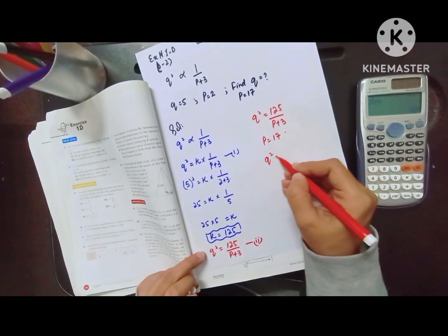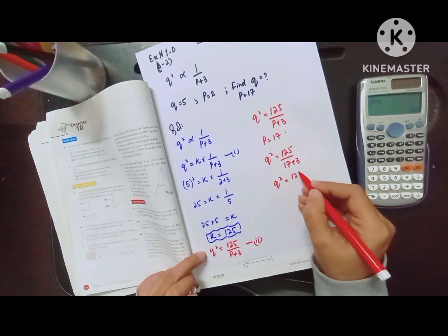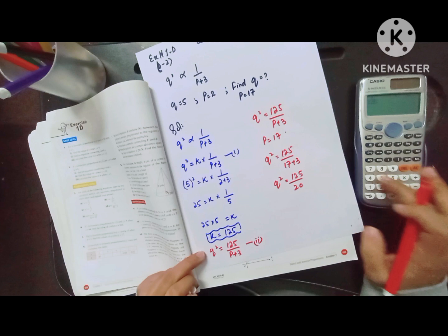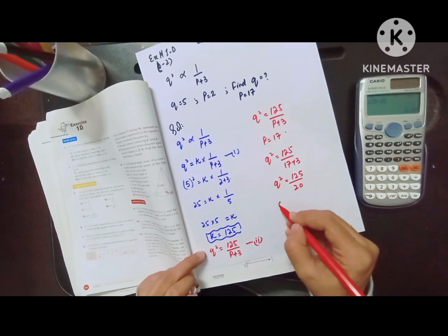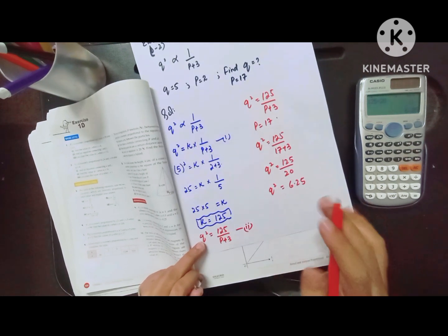125 divided by 17 plus 3, which is 20. Then q² equals 125 divided by 20, which equals 6.25. They are asking about the value of q.